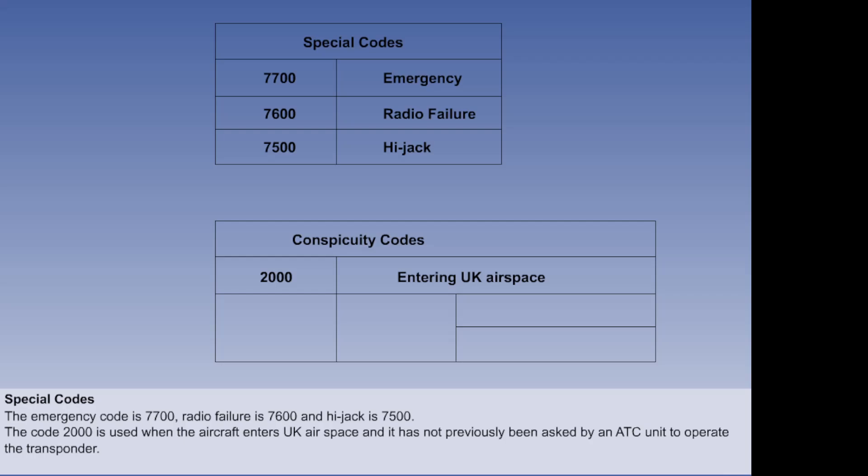In the second table, which shows conspicuity codes, 2000 is used when the aircraft enters UK airspace and it has not previously been asked by an ATC unit to operate the transponder. In the UK, a conspicuity code has to be used. The code 7000 and mode charlie must be selected above flight level 100 except when given a different setting by air traffic control or one of the special codes is used. 7000 and mode charlie should be used below flight level 100 unless the same exceptions apply.